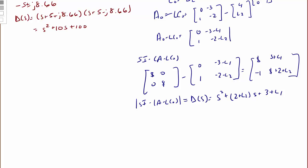Equating coefficients: 2 + L2 = 10, so L2 = 8; and 3 + L1 = 100, so L1 = 97. Our final L matrix is [97; 8].